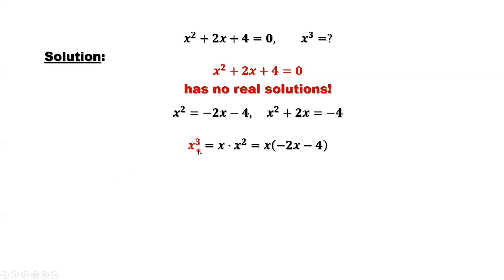x cubed can be rewritten as x times x squared. What is x squared? We have here negative 2x minus 4. Simplify. We can factor negative 2 out. Negative 2 times x squared plus 2x.